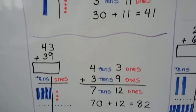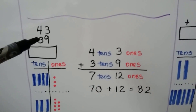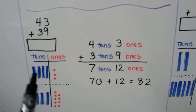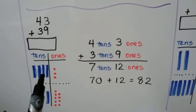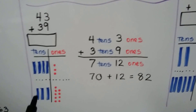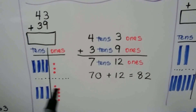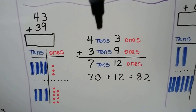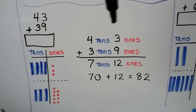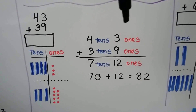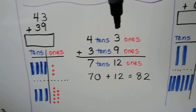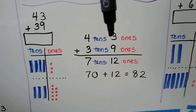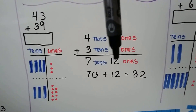Let's try it again. We have 43 plus 39. We have four tens and three ones, and we're adding three tens and nine ones. We stack the tens on top of each other and the ones on top of each other. We add the ones: 9 plus 3 is 12. We have 12 ones.